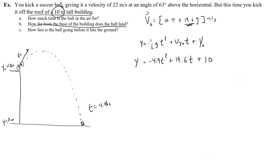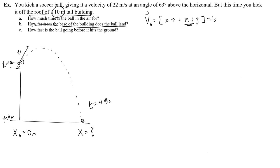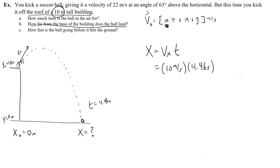Part B: how far from the base of the building does the ball land? The x-velocity is still 10 m/s, constant throughout. Using the constant velocity equation with time 4.46 seconds: x = 10 × 4.46 = 44.6 meters. The ball lands 44.6 meters from the base of the building — a bit farther since we kicked from the roof.